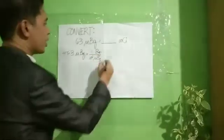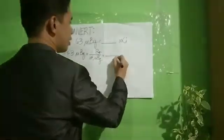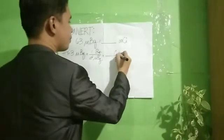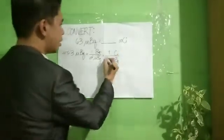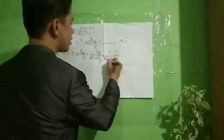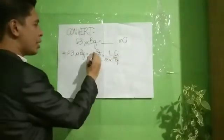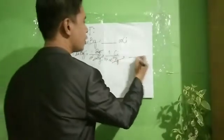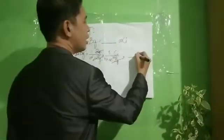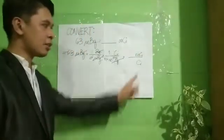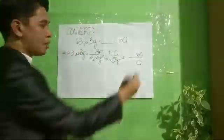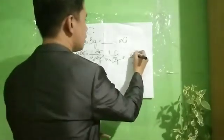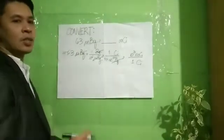Convert from SI going to traditional. We know that for every 1 curie, there are 3.7 times 10 raised to 10 becquerel. Cancel becquerel. Curie going to millicurie. Curie is larger, so for every 1 curie, there are 10 raised to 3 millicurie.